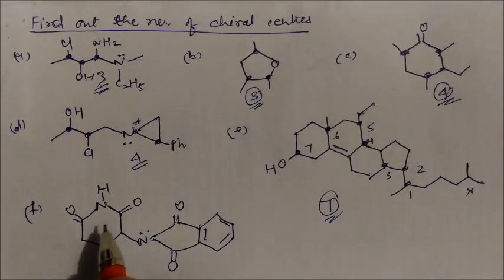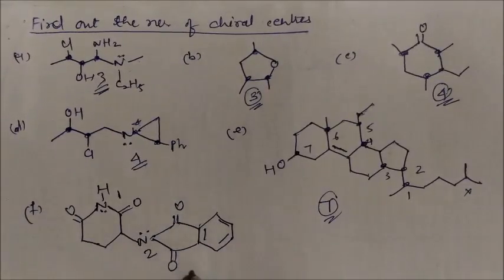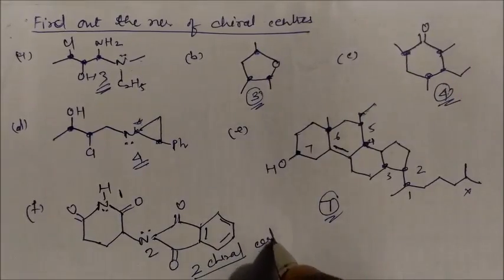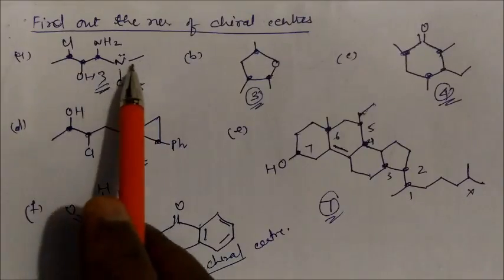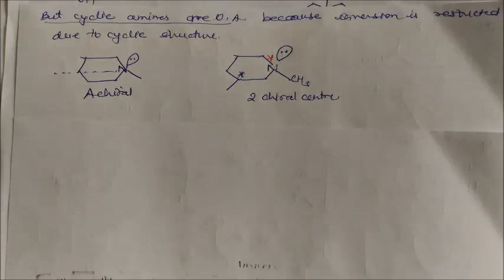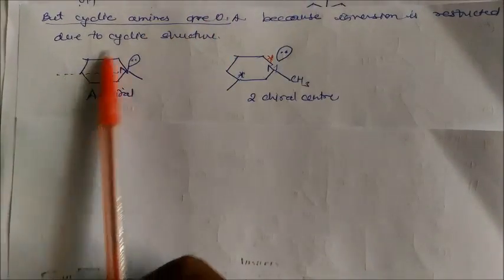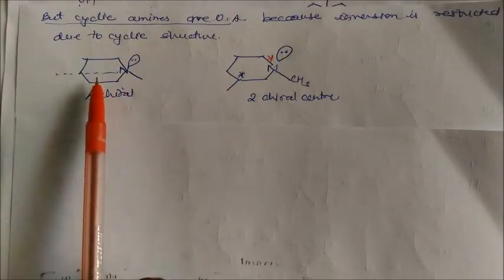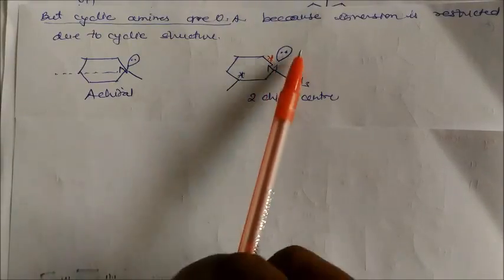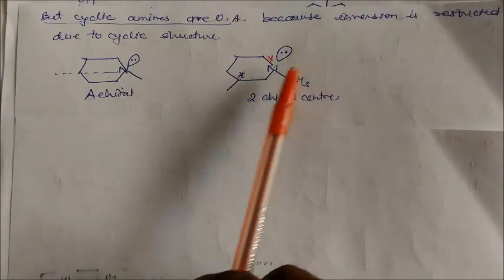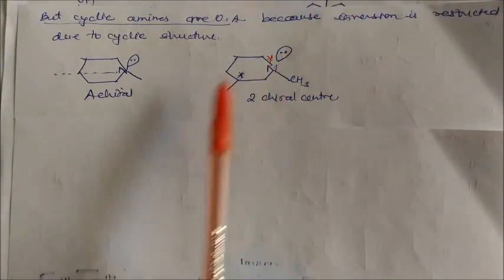Coming to the next one — this nitrogen present in the aliphatic cyclic chain: one center here, and again this carbon is present in the cyclic chain — so again one. There are two chiral centers in this molecule. So these are the answers. You have to be careful: if nitrogen is present in a cyclic compound, it can be a chiral center. But if it is present in an aliphatic chain, it will lose its chirality. In cyclic amines, these are optically active compounds because inversion is restricted due to the cyclic structure. Nitrogen with a lone pair in a cyclic structure is optically active. But if it is acyclic, the lone pair is not counted due to amine inversion. Only in cyclic amines is the lone pair counted.